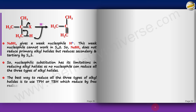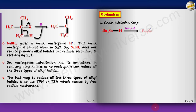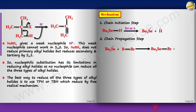The free radical mechanism of tributyltin hydride (TBH): initiation produces Bu₃Sn• radical. In propagation, Bu₃Sn• abstracts Br from RBr to give R•; the R• then abstracts H from Bu₃SnH to give the alkane RH and regenerate Bu₃Sn•, which propagates the chain.